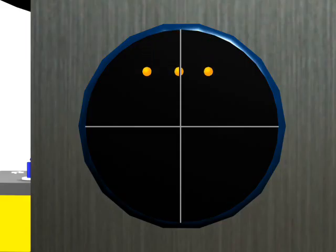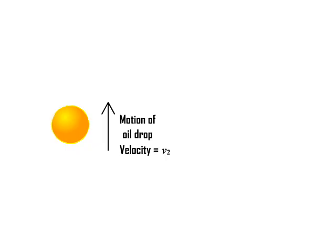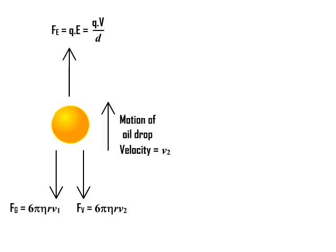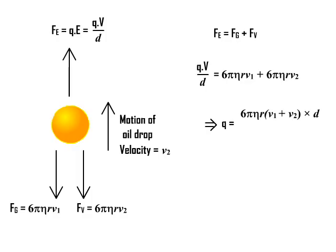Number 2, the oil drop may rise up with constant velocity V2 which may be experimentally calculated by recording the time required for the oil drop to rise a certain distance. Now the viscous force acts downward because the oil drop is moving up. Now since the oil drop is rising up with constant velocity, all the forces acting on the oil drop should balance each other. That is Fe equal to Fg plus Fv where Fv equal to 6 pi eta r v2 and Fg is 6 pi eta r v1. Therefore Q into V by D equal to 6 pi eta r v1 plus 6 pi eta r v2 which implies Q equal to 6 pi eta r (v1 plus v2) into D divided by V. So in either case Q can be calculated.